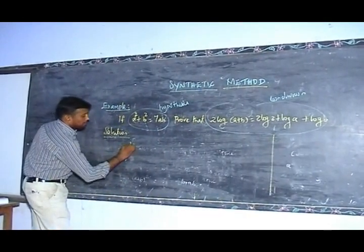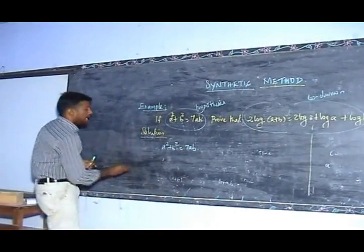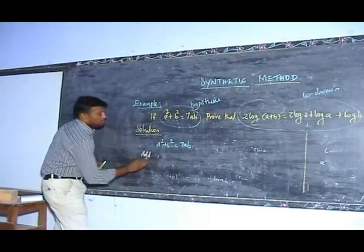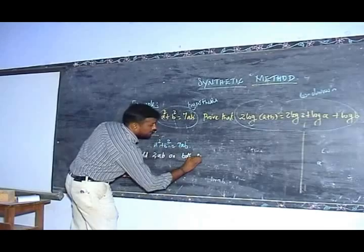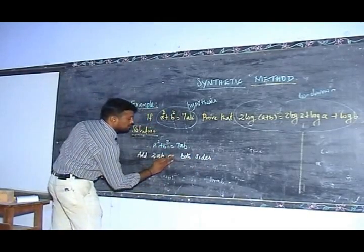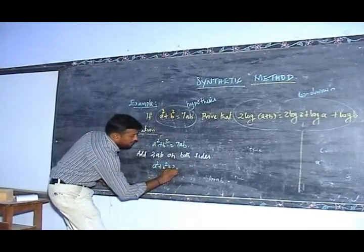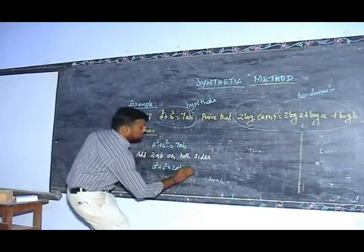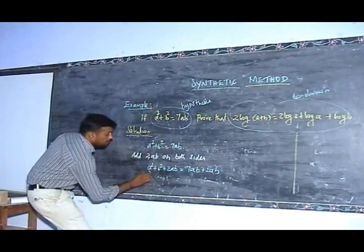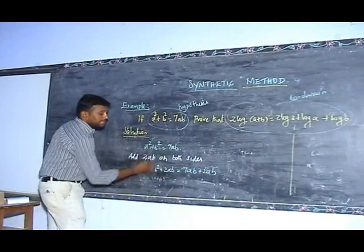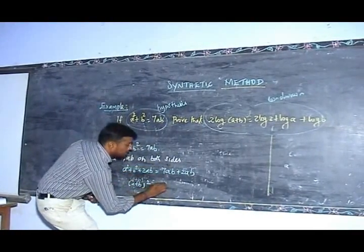Take the hypothesis: a squared plus b squared is equal to some multiple of ab. This is the hypothetical part. Therefore, add 2ab on both sides. We get a squared plus b squared plus 2ab on one side, and the sum ab plus 2ab on the other side. We can write a squared plus b squared plus 2ab as (a + b) whole square, and 7ab plus 2ab is equal to 9ab.